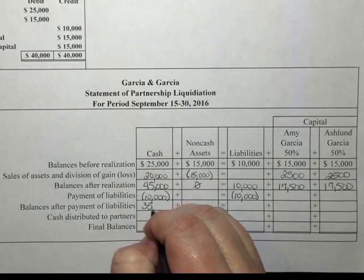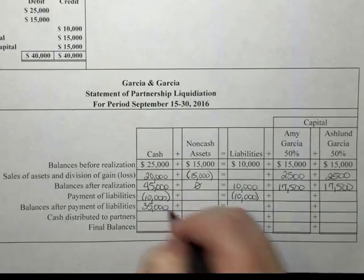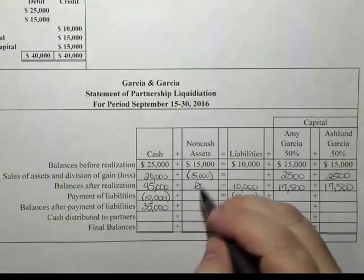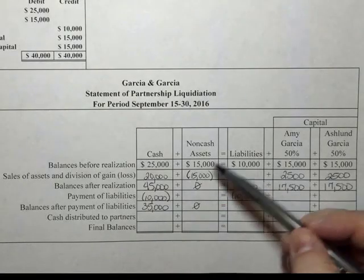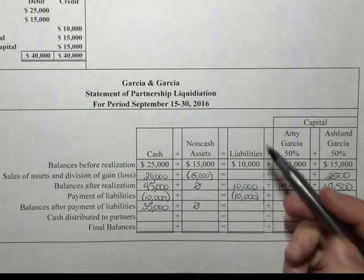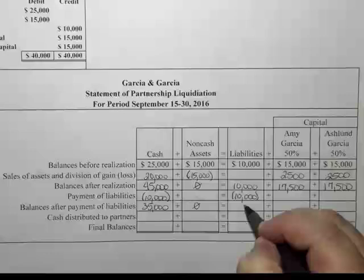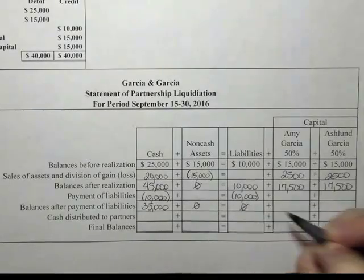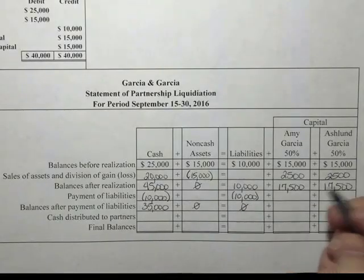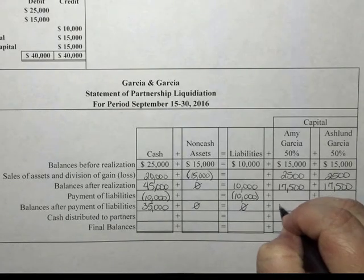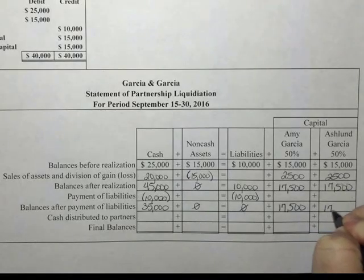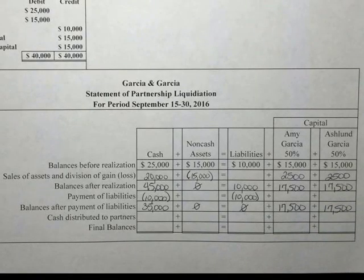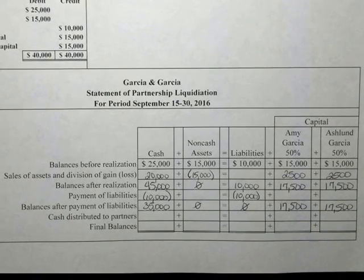The balances after the payment of liabilities leave us with $35,000 in cash, zero non-cash assets, zero liabilities, and the capital accounts have not changed as of yet.